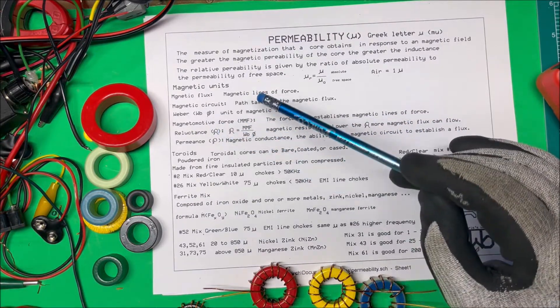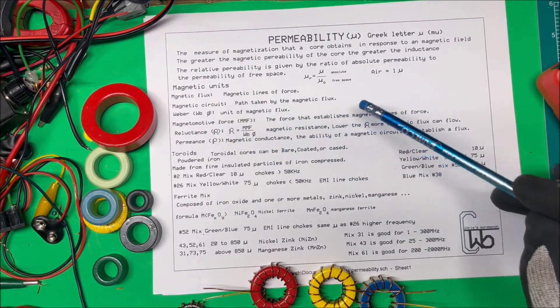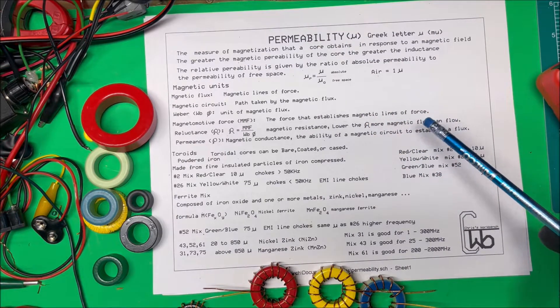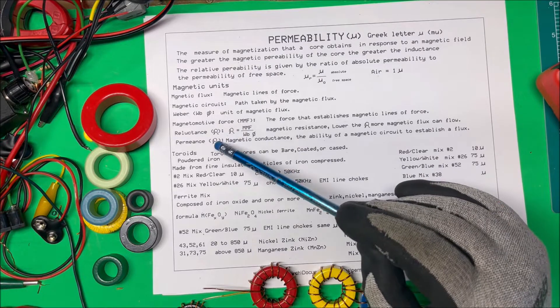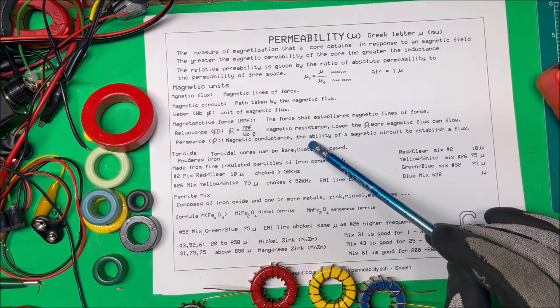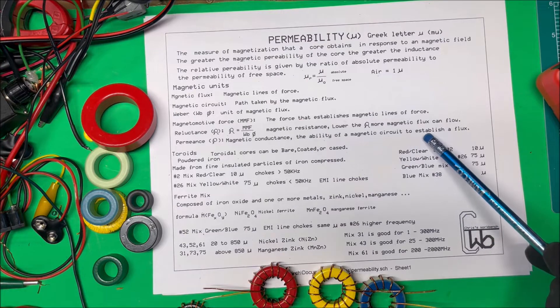Reluctance, the stylized R, that's the magnetic resistance. The lower the reluctance, the more magnetic flux can flow. And permanence, that's stylized P, and that's the magnetic conductance and the ability of a magnetic circuit to establish a flux.